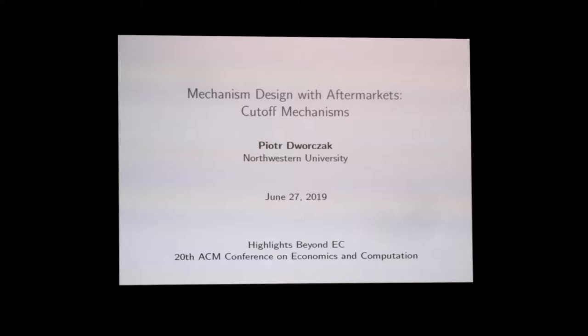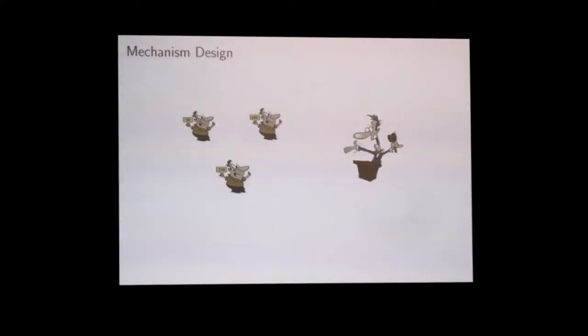I want you to think about a standard allocation problem. We have a seller of a single object and a bunch of potential buyers. What's the traditional mechanism and approach to this problem, where we would just assume that the seller controls the entire interaction between these agents within the mechanism, and that determines the allocation of the object. In a sense, the mechanism is the game played by the agents.